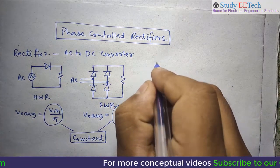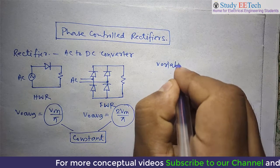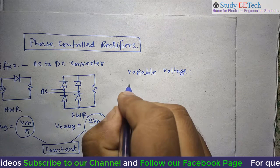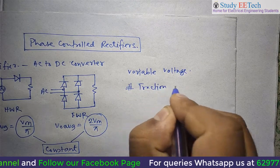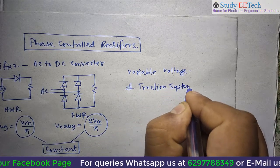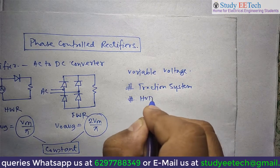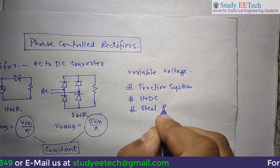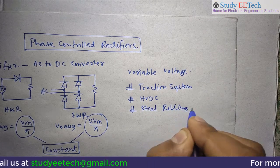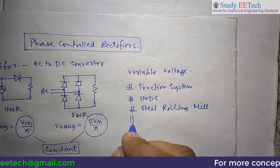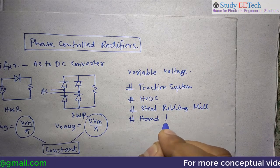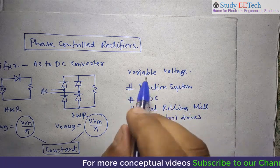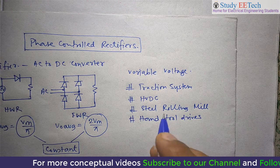But in power electronics, we need variable voltage — variable DC voltage. Like in traction systems, in the case of HVDC, in steel rolling mills, and hand tool drives. These are the different application areas where we need a variable DC voltage.